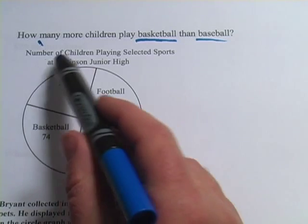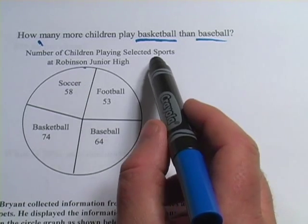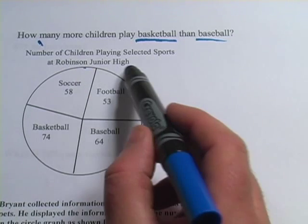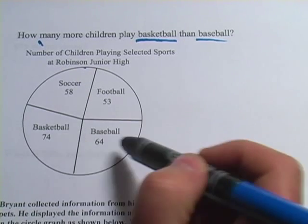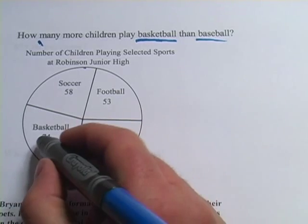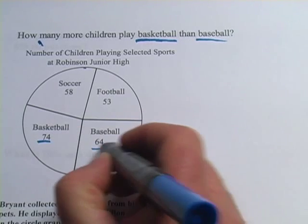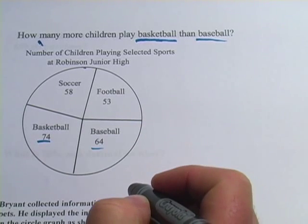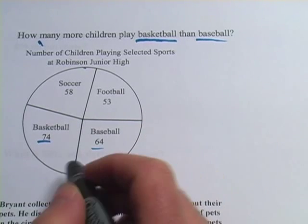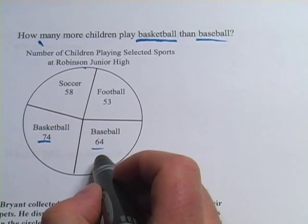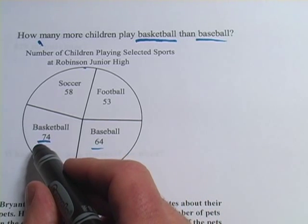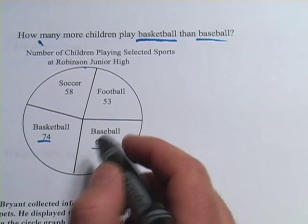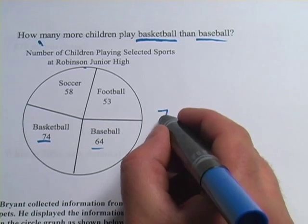Our graph shows the number of children playing selected sports at Robinson Junior High. They have soccer, football, basketball, and baseball. Basketball and baseball are the ones we're interested in, and the math is going to be pretty simple. We have 74 playing basketball and 64 playing baseball.